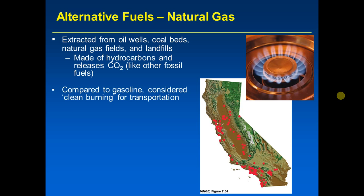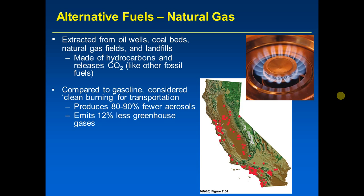Compared to gasoline, natural gas is considered clean burning for transportation for two major reasons. First, it produces fewer aerosols — it's better for air quality. To burn the equivalent amount of natural gas to get the same energy as gasoline, that quantity will produce 80–90% fewer aerosols — as little as one-tenth of the pollution to go the same distance. Second, the natural gas needed for the same amount of energy will emit 12% less greenhouse gases. So it's better for the air in two ways: less aerosols and less greenhouse gases.